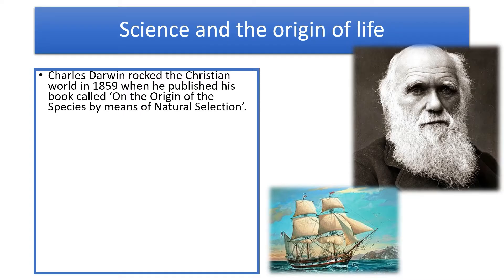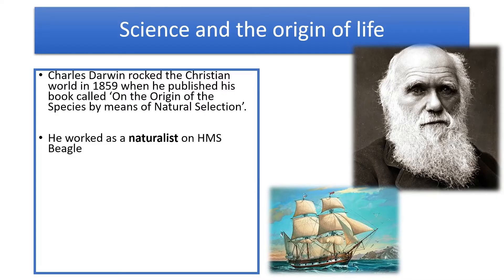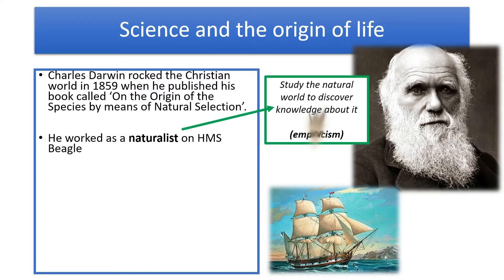It all stems from one very famous guy: Charles Darwin. He wrote a book called On the Origins of Species by Means of Natural Selection. Darwin was a naturalist who travelled around the world on a ship called the Beagle. In particular, he went to the Galapagos Islands and observed lots of different animals. Because he was observing the natural world and using evidence based in the world, this is called empiricism — studying the natural world to gain knowledge about it. This is what makes his theory so convincing, because it's based on facts and evidence.